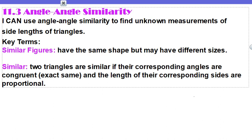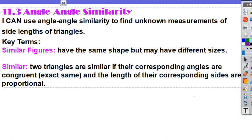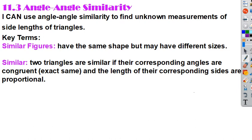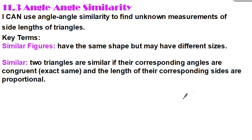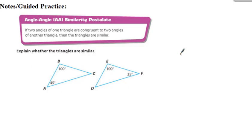If they have the same angles, then the lengths of the corresponding sides are proportional. Remember when we did dilations, we set up a ratio comparing the image to the original. We're going to do the same thing here — set up a ratio, but we'll have proportions. Angle-angle similarity says that if two angles of one triangle are congruent to two angles of another triangle, then the triangles are similar.